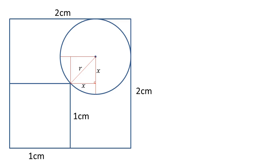I'm going to label the sides of this square x. We can see that we've got a right angle triangle with a hypotenuse of length r and two sides of length x.